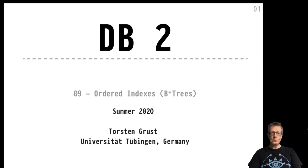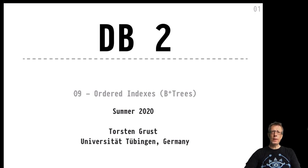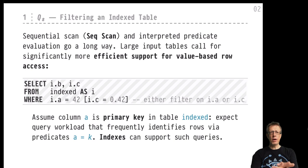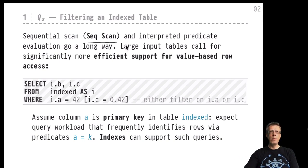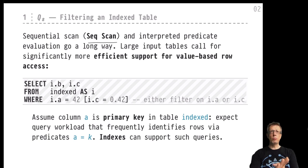Indexes are additional data structures maintained by the database system to support the rapid evaluation of predicates. We've seen that evaluation of predicates can be done by sequential scanning - that would invoke the interpretation of the boolean expression making up the predicate, and rows where the boolean predicate yields true would be admitted to the result. But with really large input tables or predicates evaluated again and again, this row-by-row interpretation really doesn't cut it.